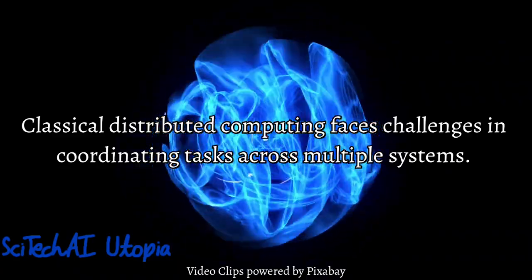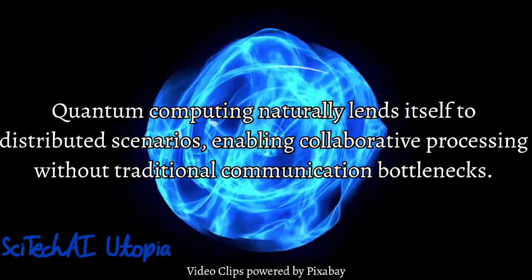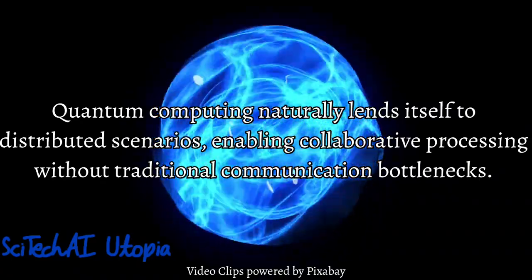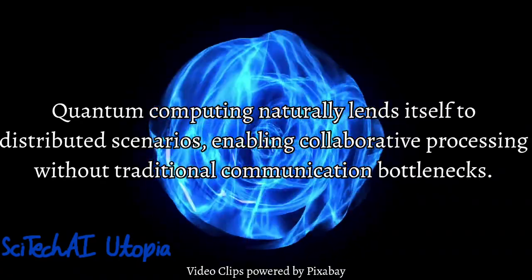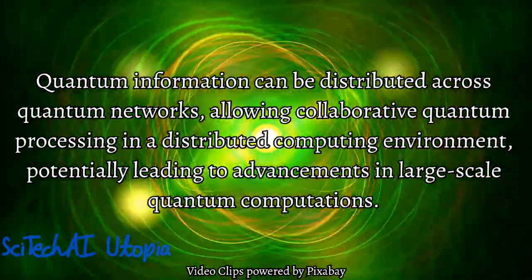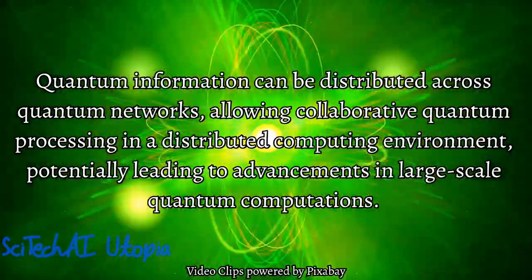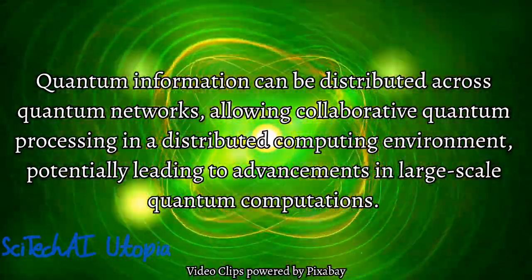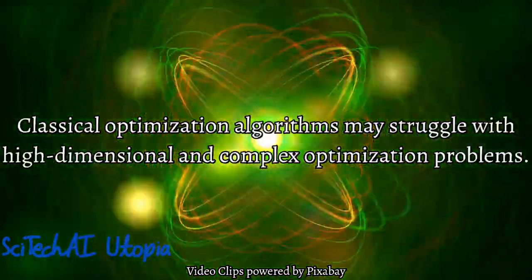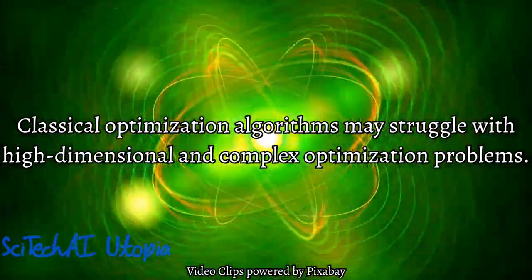Number 10: Distributed Quantum Computing. Classical distributed computing involves coordinating tasks across multiple classical computers, often leading to communication bottlenecks and increased complexity. Quantum computing naturally lends itself to distributed scenarios—quantum information can be distributed across quantum networks, allowing collaborative processing without the same communication challenges faced by classical distributed systems. This opens the door to novel approaches in collaborative quantum computing, where information is shared and processed collectively.